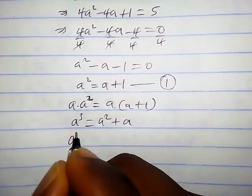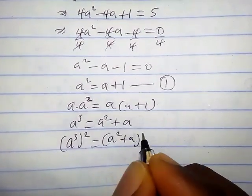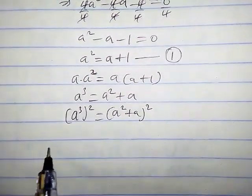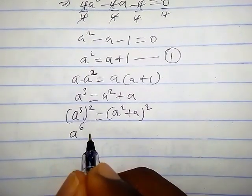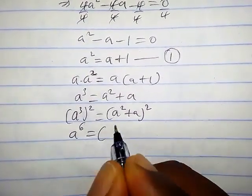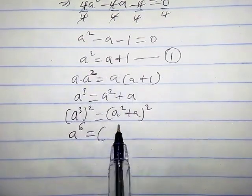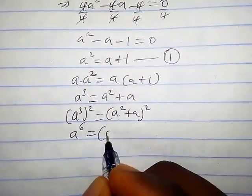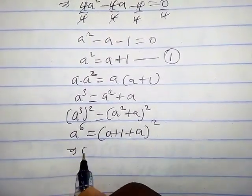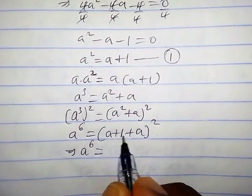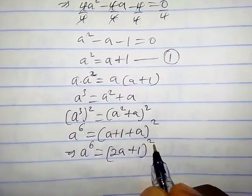Squaring both sides gives a cube squared equals a squared plus a, all squared. By exponent laws, a to the six equals a squared plus a, all squared. We replace a squared with a plus one, giving us a to the six equals a plus one plus a, all squared.